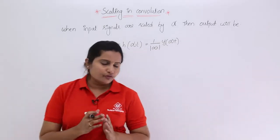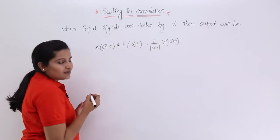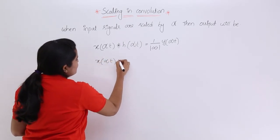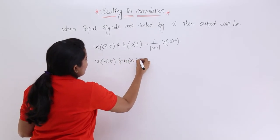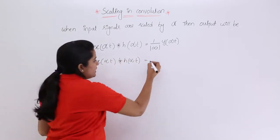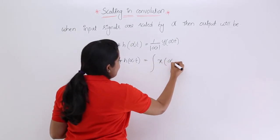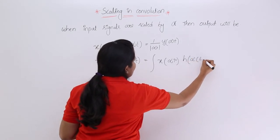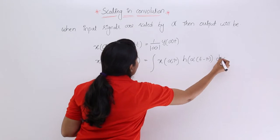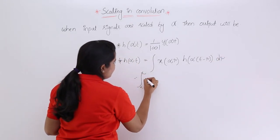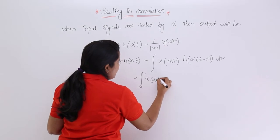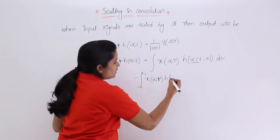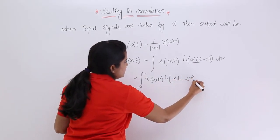Now I am going to prove this by starting with the convolution of x(alpha·t) and h(alpha·t). The convolution of these two signals is the integral of x(alpha·tau) and h of t minus tau — meaning in place of t you substitute t minus tau — giving h(alpha·(t minus tau)). This is equivalent to the integral from minus infinity to infinity of x(alpha·tau)·h(alpha·t minus alpha·tau) d·tau.